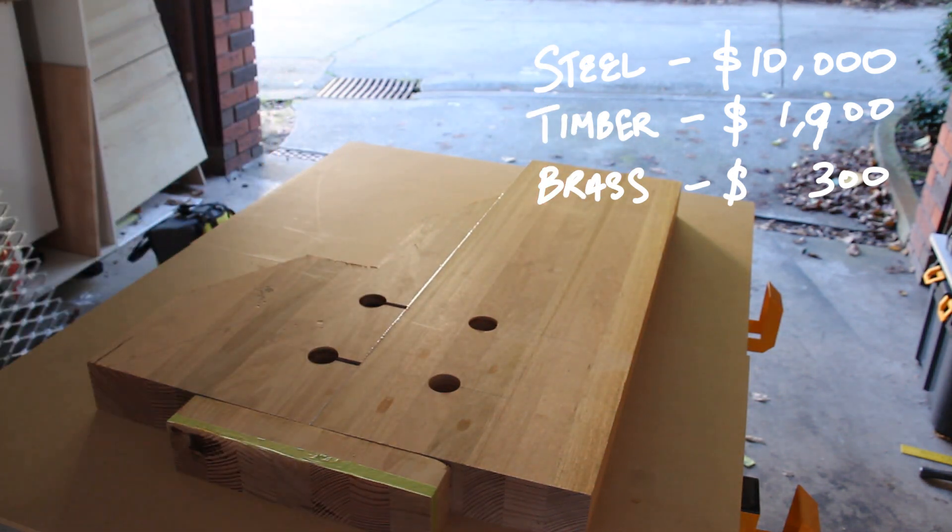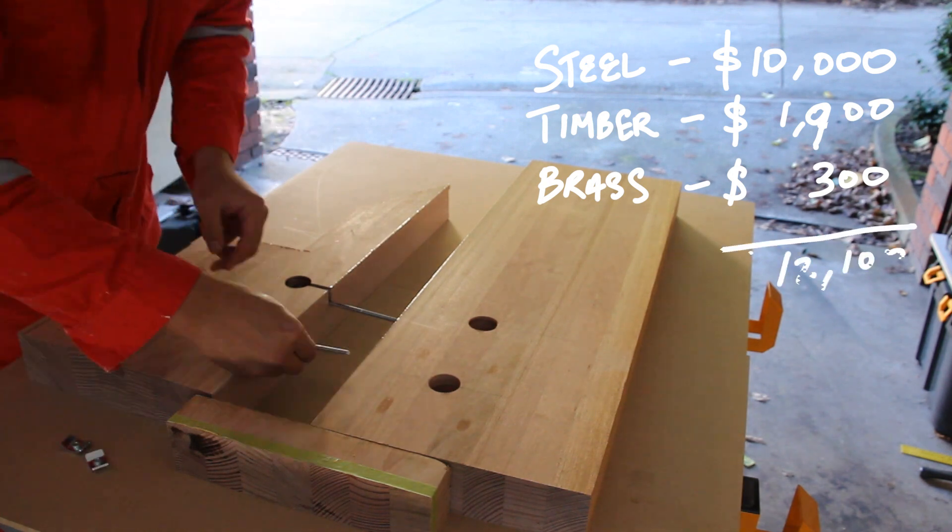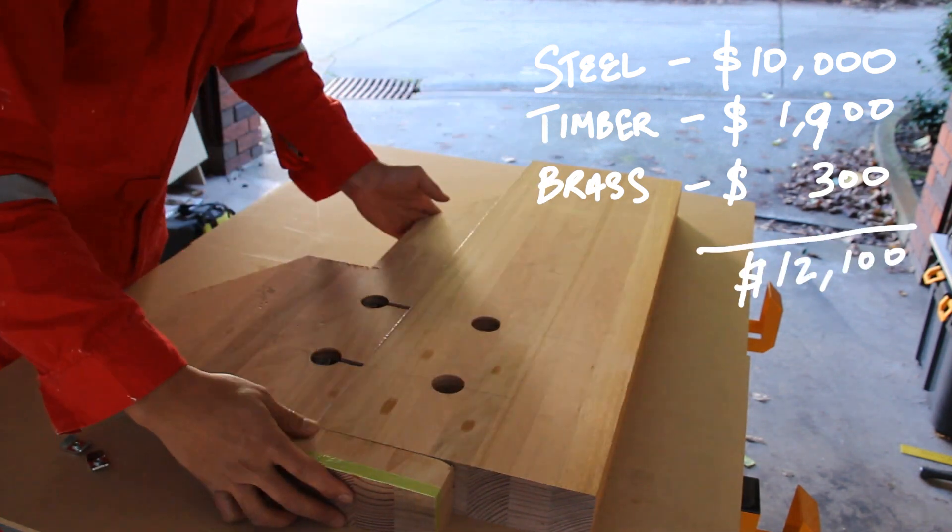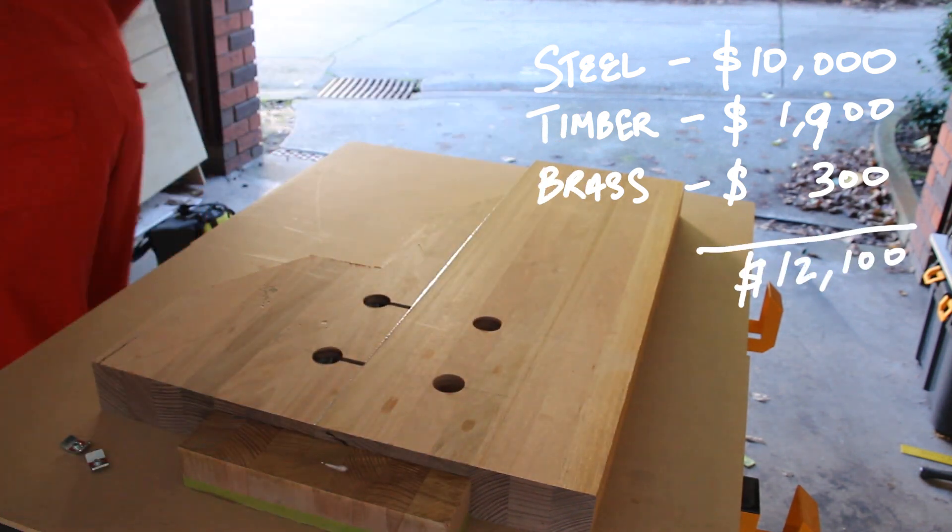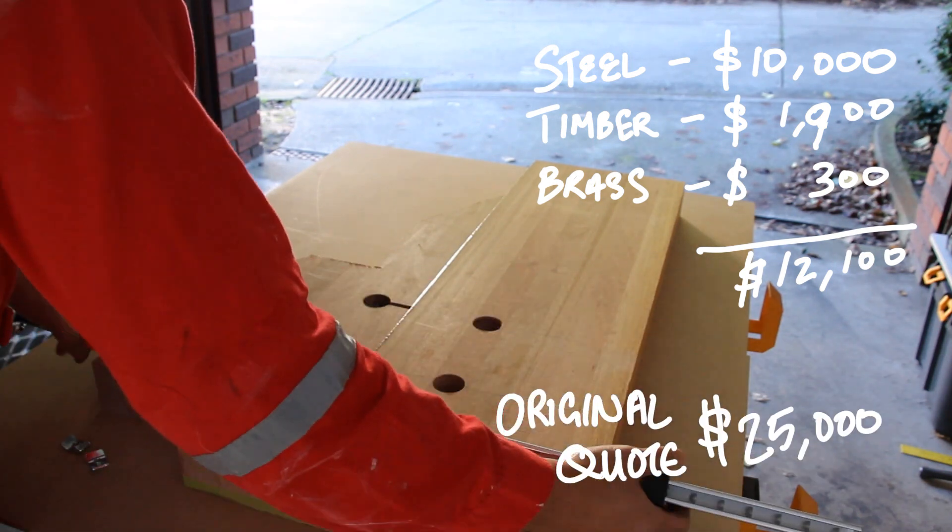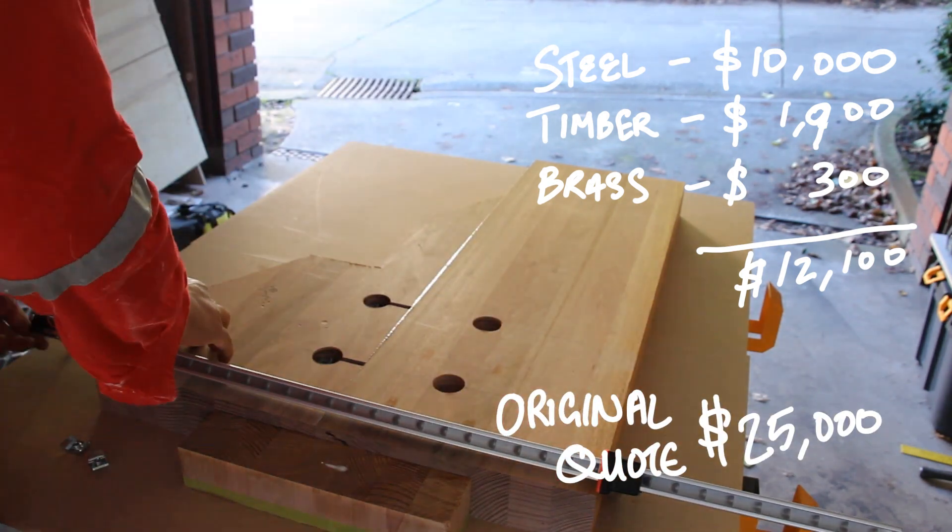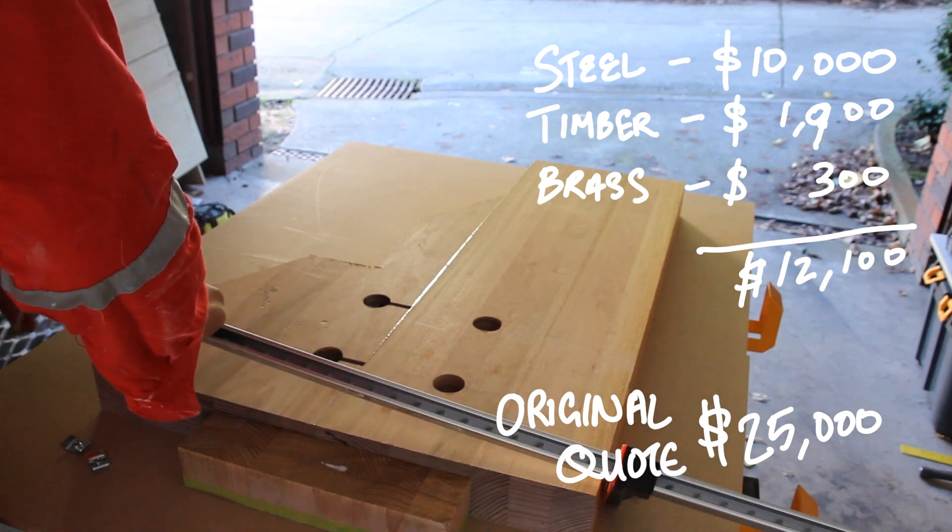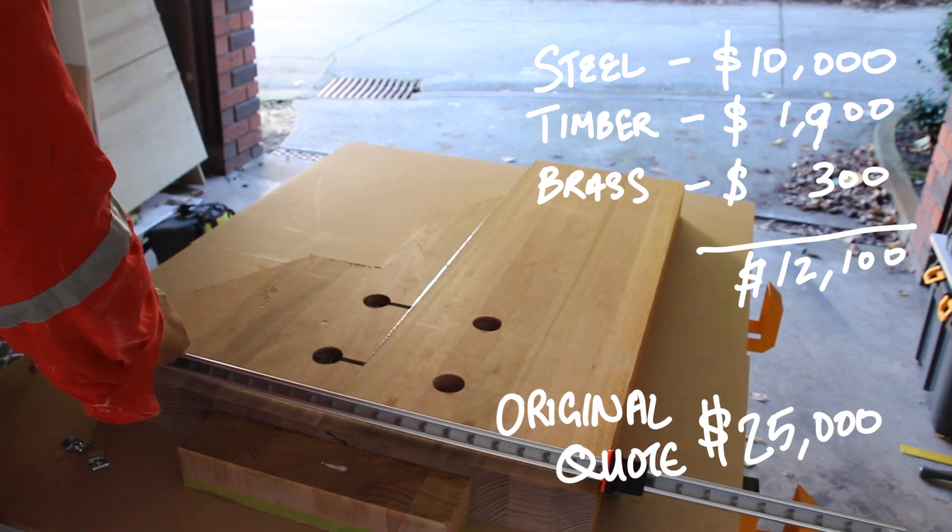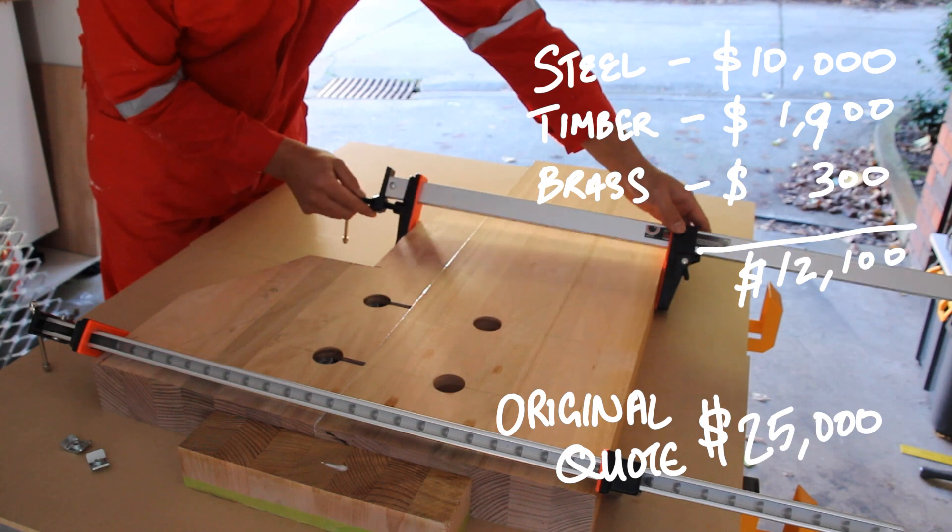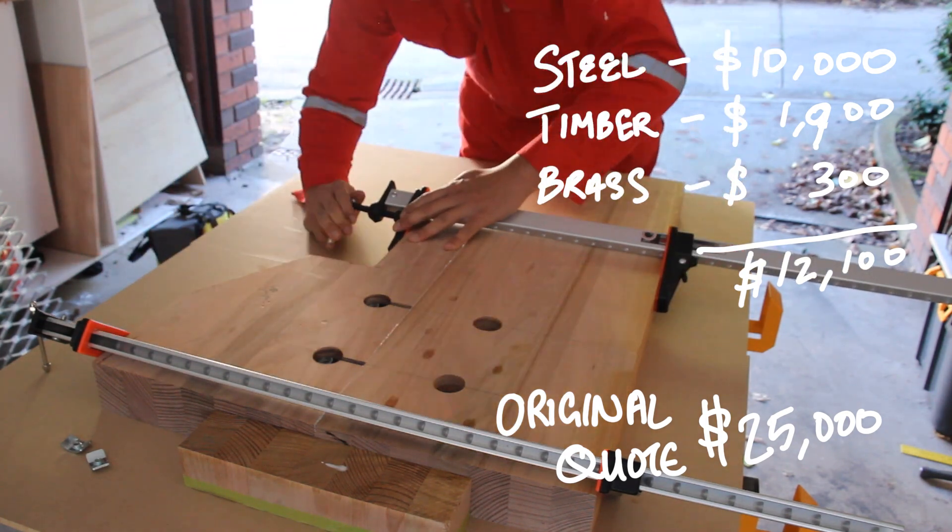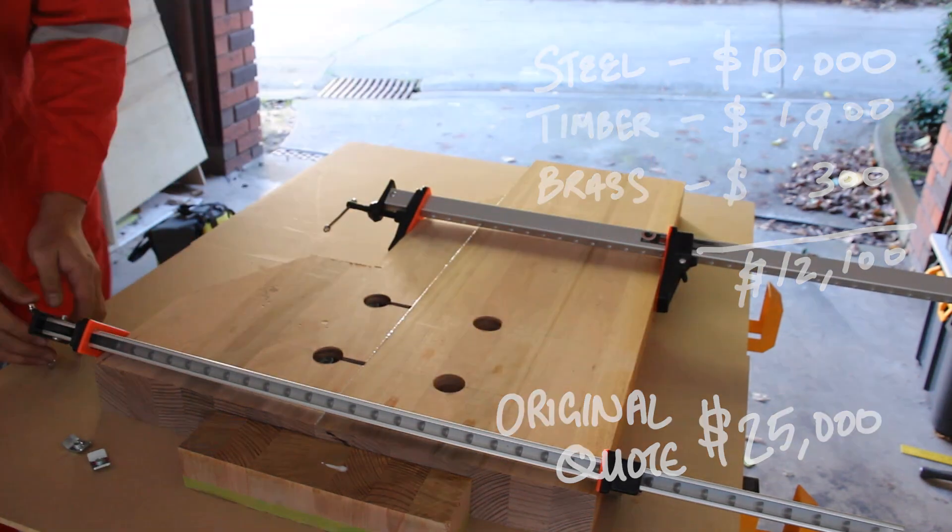So all up in this project, I spent around $12,000. That compared with the $25,000 quotation that we got, that's a total saving of $13,000. Obviously, this is purely material cost. I haven't accounted for any overheads or my hours spent on this project.